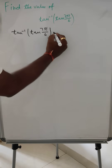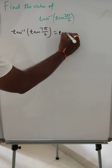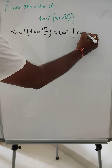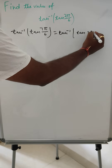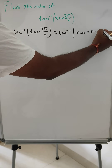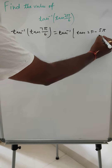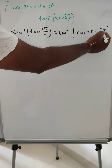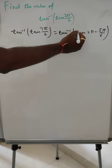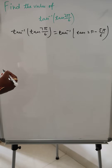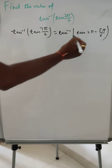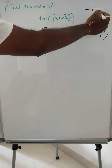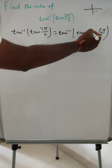So let's start doing this. tan⁻¹(tan(7π/6)) — we can write this as tan⁻¹(tan(2π - 5π/6)). So 12 minus 5 gives 7π, and 2π - 5π/6 puts us in the fourth quadrant, where cosine and cosec are positive.